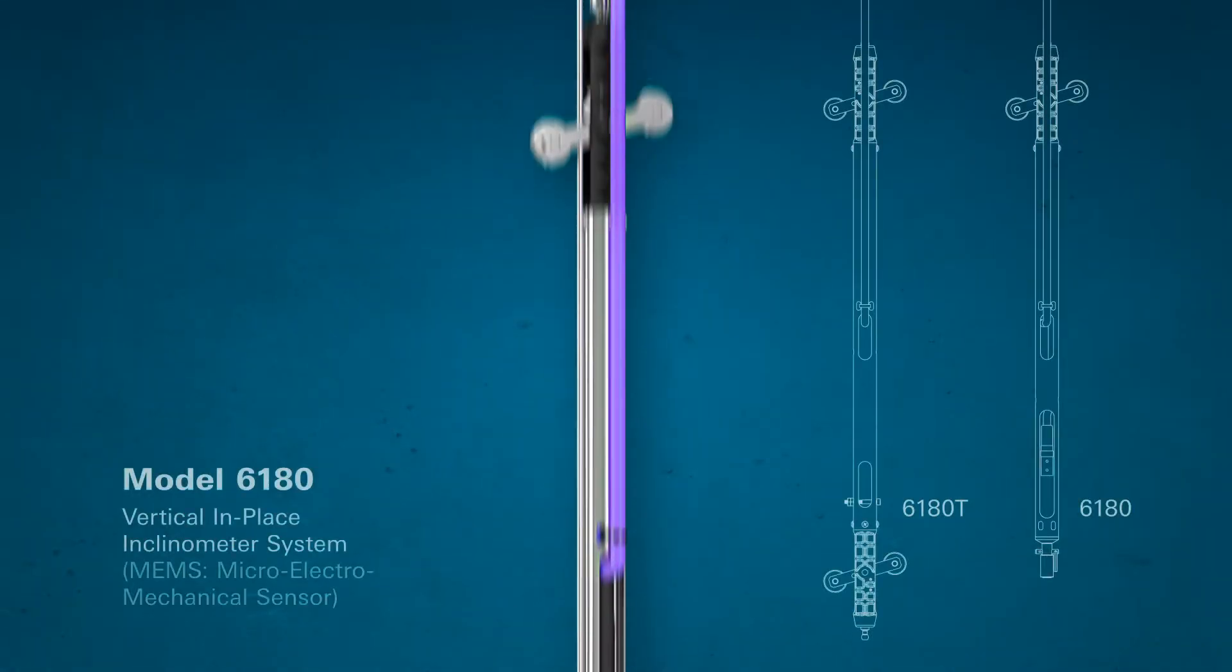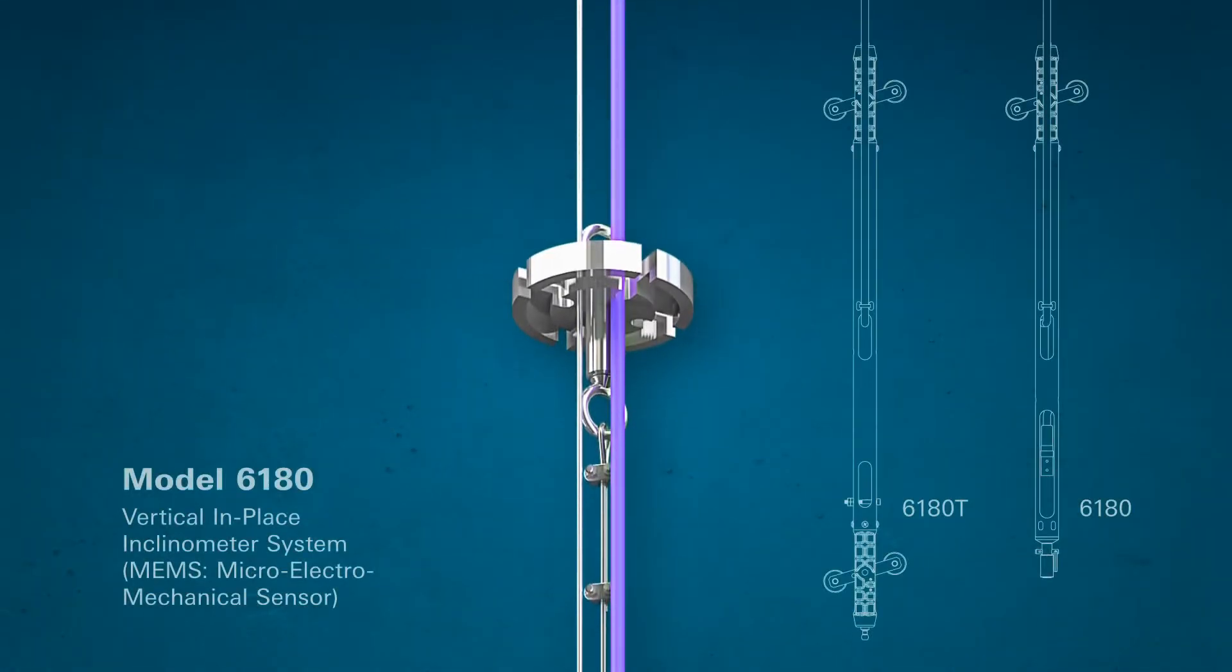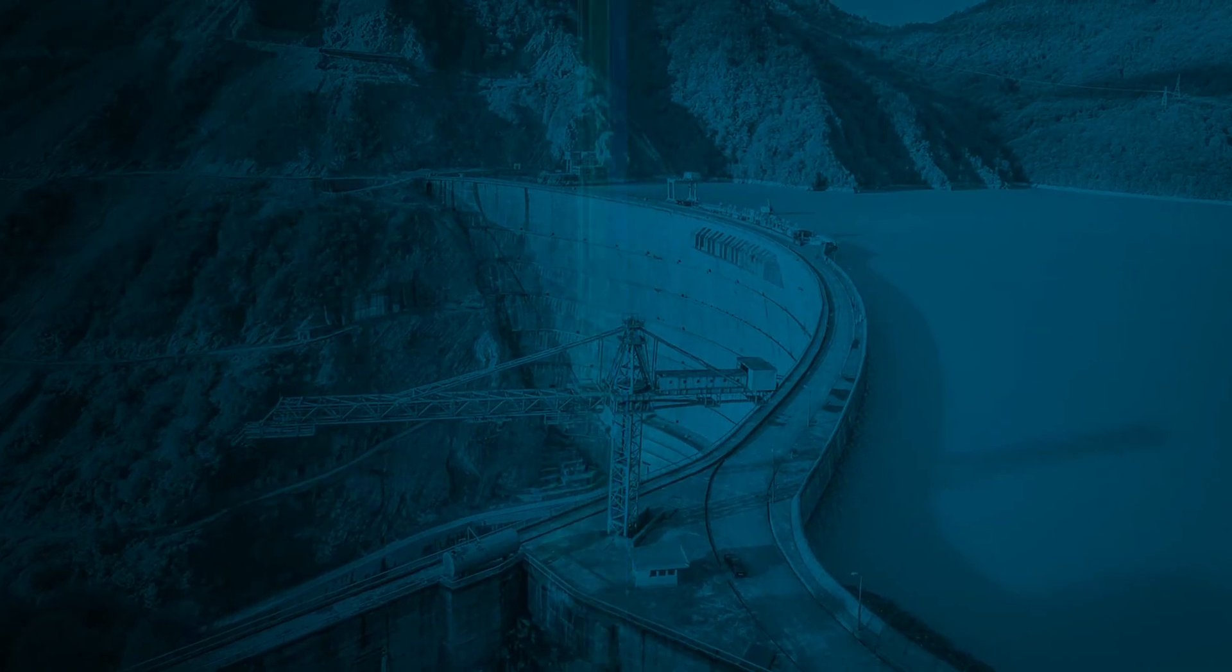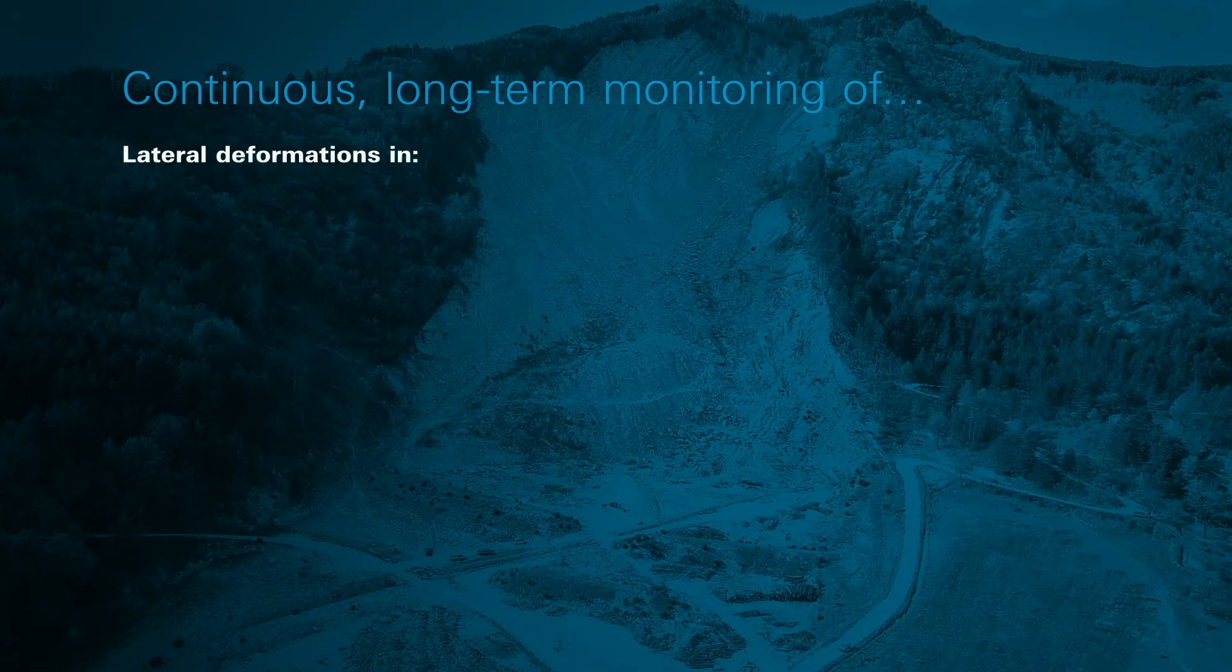Introducing the Model 6180 Vertical In-Place Inclinometer System. The Model 6180 enables continuous long-term monitoring of lateral deformations.